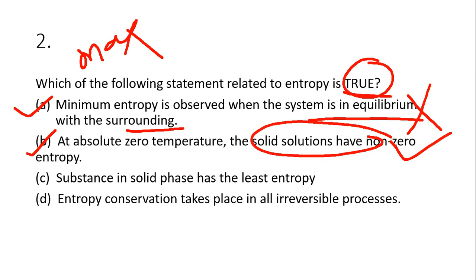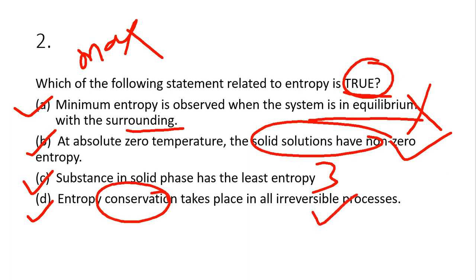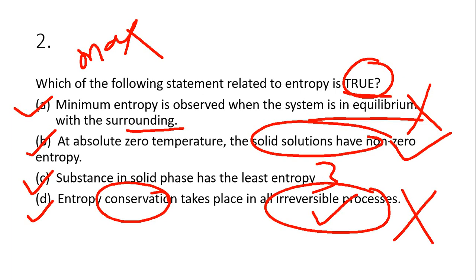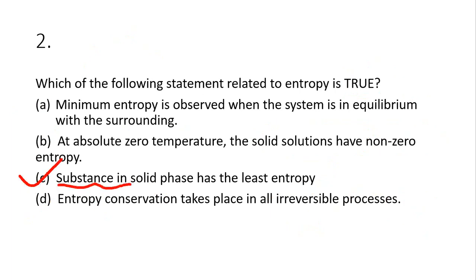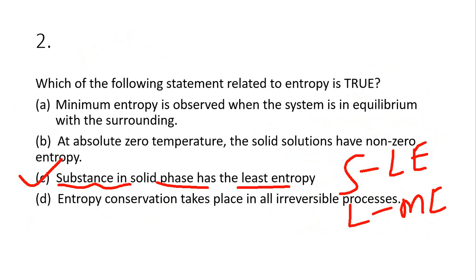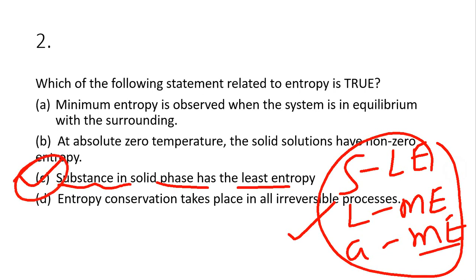Third statement: substance in solid phase has the least entropy. Fourth statement: entropy conservation takes place in all irreversible processes — but entropy is not conserved in irreversible processes, so option D is wrong. The correct answer is option C: a substance in solid phase has the least entropy. In solid phase we have least entropy, liquid phase has medium entropy, and gas phase has maximum entropy.